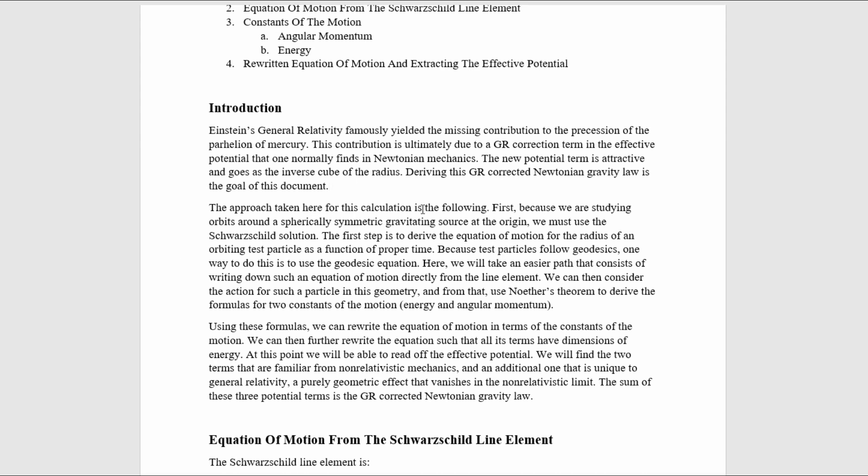The approach taken here for this calculation is the following. First, because we are studying orbits around a spherically symmetric gravitating source at the origin, we must use the Schwarzschild solution. The first step is to derive the equation of motion for the radius of an orbiting test particle as a function of proper time. Because test particles follow geodesics, one way to do this is to use the geodesic equation.